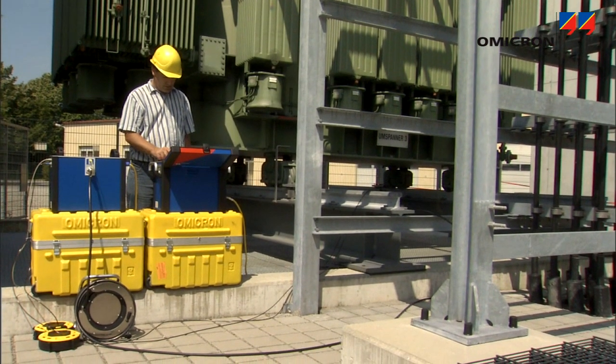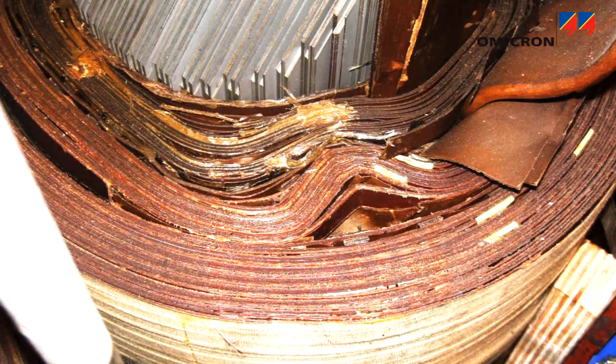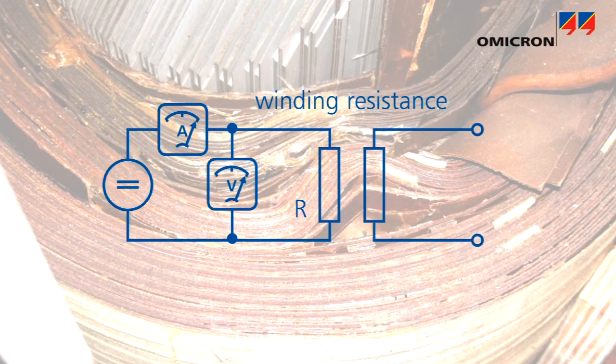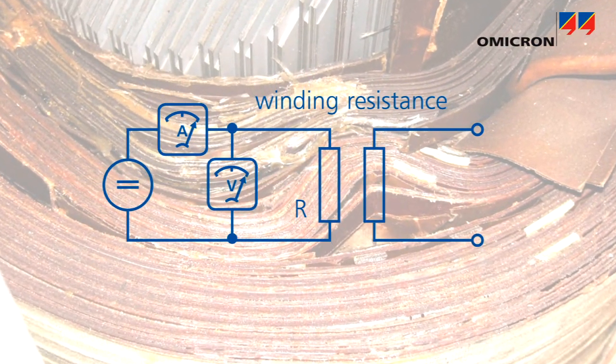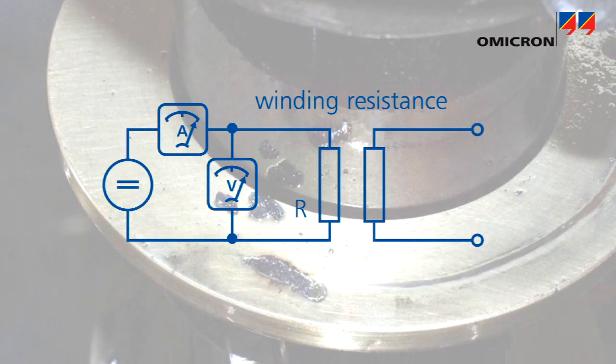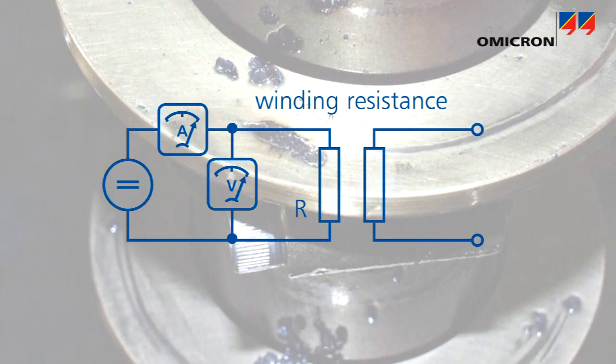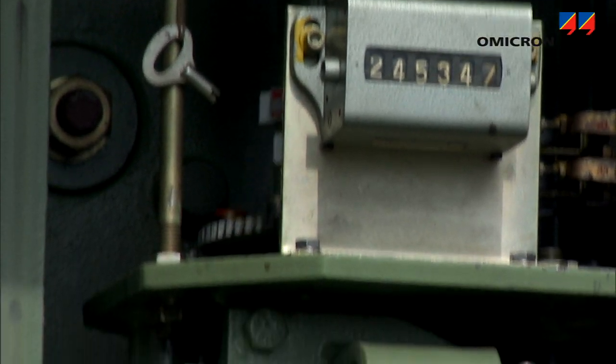On site, this measurement is performed to evaluate possible winding damage, such as short circuits between windings or between turns, open circuits, contact problems, and to assess the condition of the tap changer.